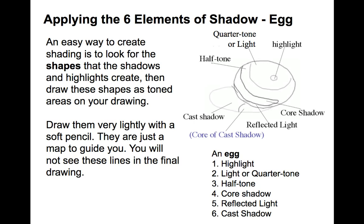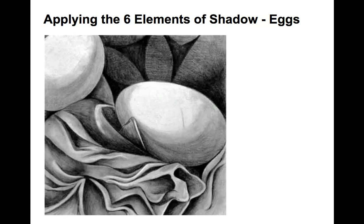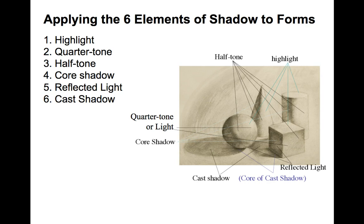You can apply this to other forms as well. Using an egg as an example, draw very lightly the areas where you are going to shade, separating them out. Draw extremely lightly — even lighter than shown — so that you can fill these areas with shade and not end up with a visible line. Examples of shaded eggs show highlights, quarter tones, half tone, coarse shadow, reflected light, and cast shadow.